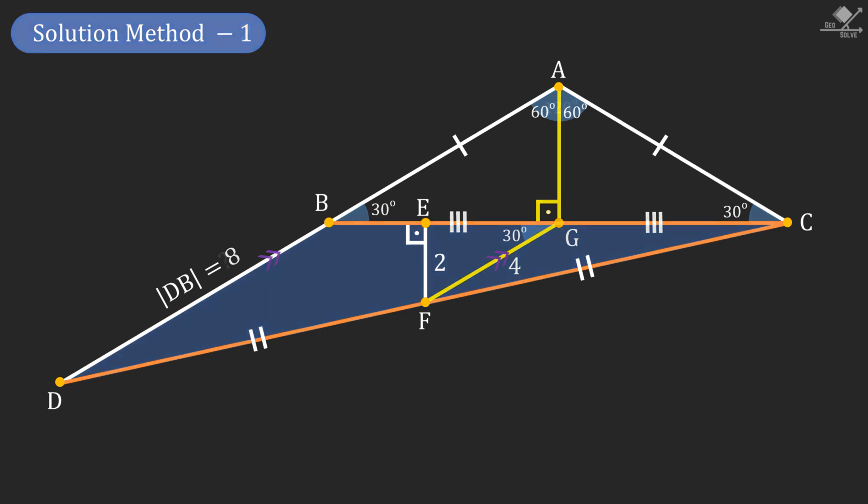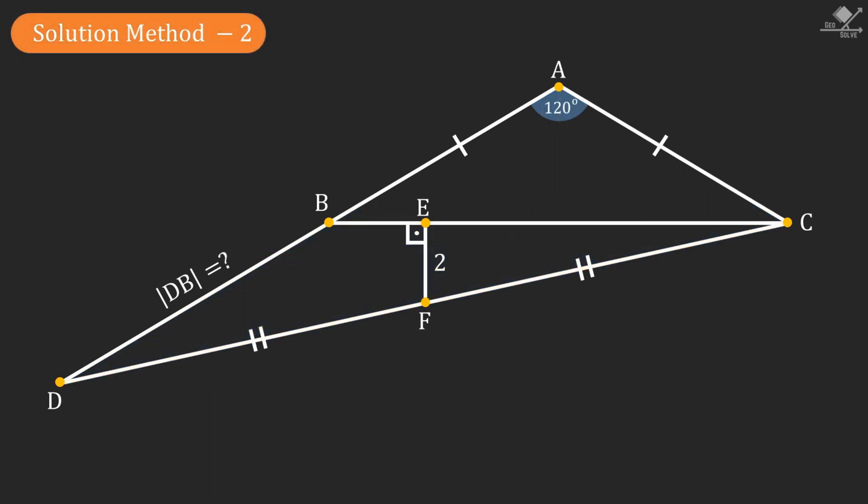Now let's start with the second solution method which will be a lot simpler. First, extend line segment BC and drop a perpendicular from point D. Since both line segments GD and EF are perpendicular to line segment GC, they should be parallel.